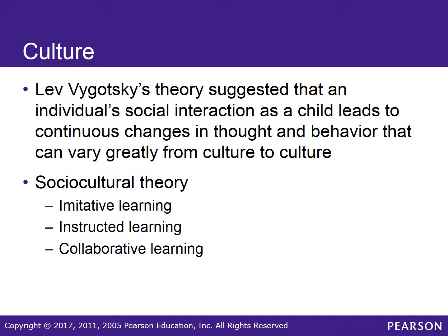Scotsky's theory suggested that an individual's social interaction as a child leads to continuous changes in thought and behavior that can vary greatly from culture to culture. He theorized that there are three ways for cultural tools to pass from one person to another: through imitation, instructed learning involving remembering instructions then self-regulating, and passing along cultural tools through collaborative learning.